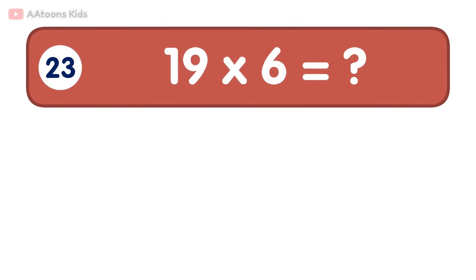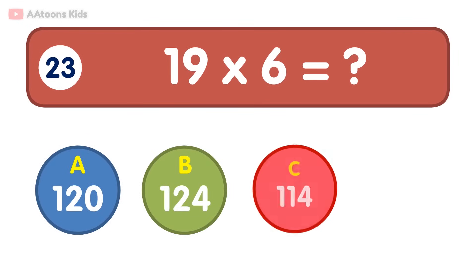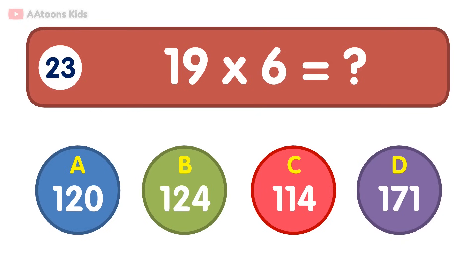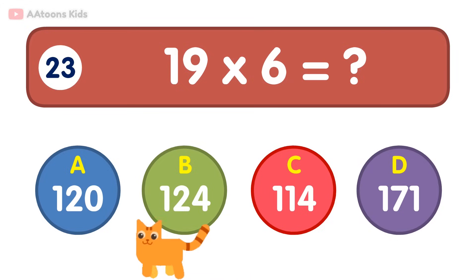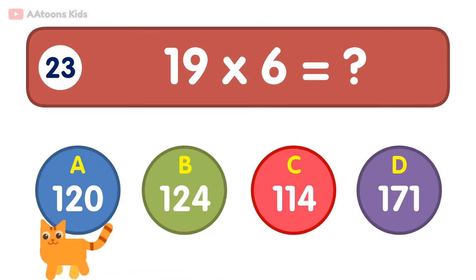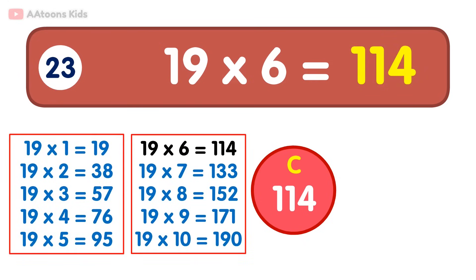19 times 6 is equal to 114. 19 times 6 is 114.